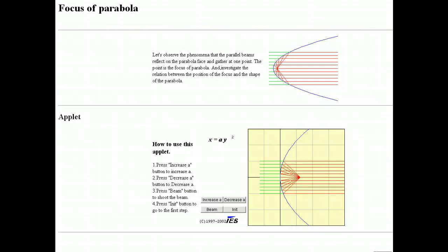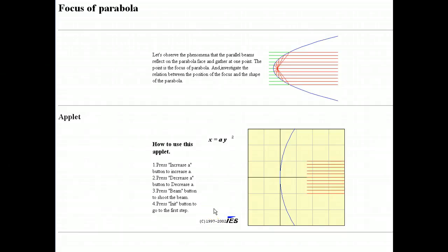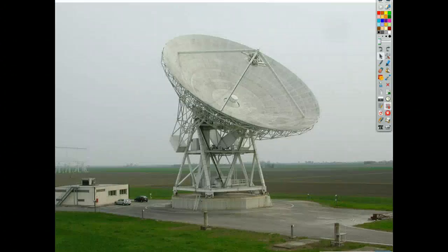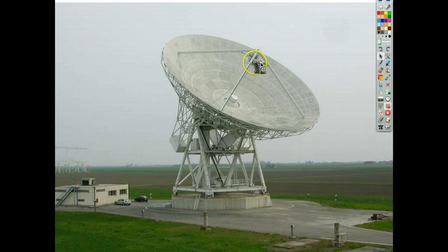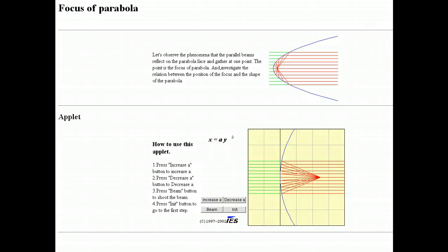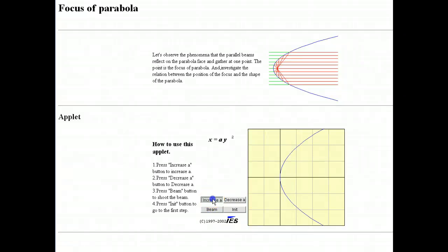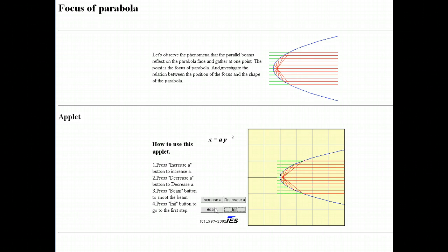I could decrease a quite a bit to make a very shallow dish and throw some beams at it. You'll see that as they bounce off, they come much further away — that might look something like a satellite dish. All the signal information comes in, bounces up, and is focused into one area, then transmitted somewhere else to process that data. If you increase a, you'll see it gets narrower and narrower, and the focal point gets closer to the vertex.